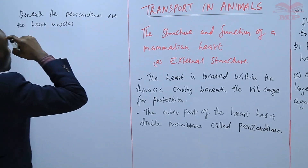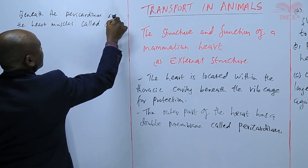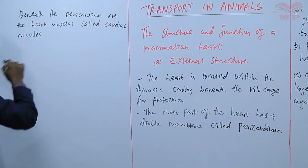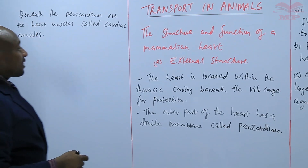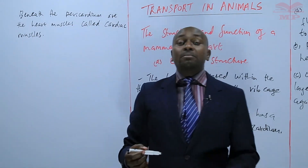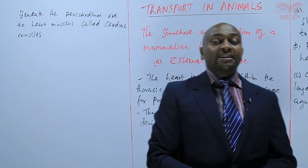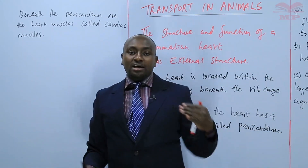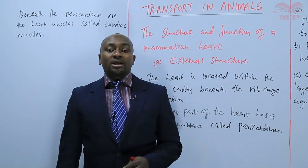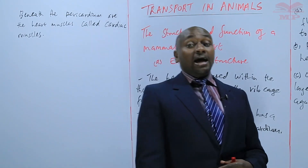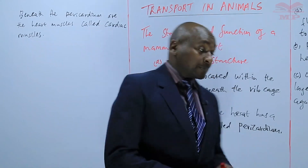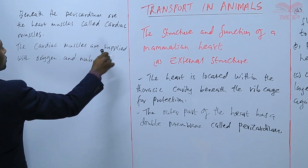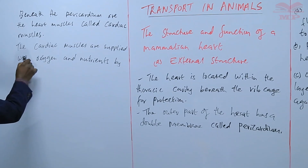Still on the outer part, beneath the pericardium, we have the heart muscles. These heart muscles are called cardiac muscles. These muscles are supplied with blood by an artery known as the coronary artery, which runs on the outer surface of the cardiac muscles to ensure those muscles are supplied with nutrients and oxygen.